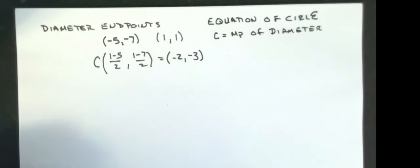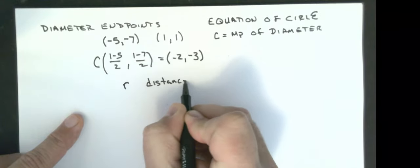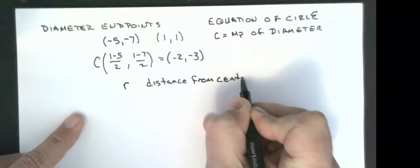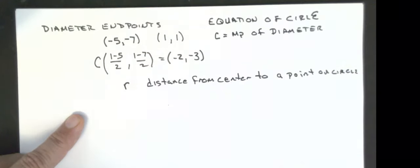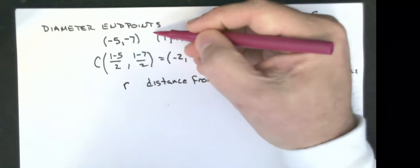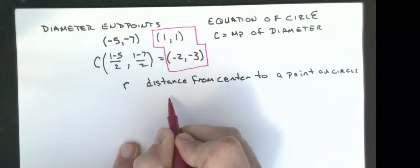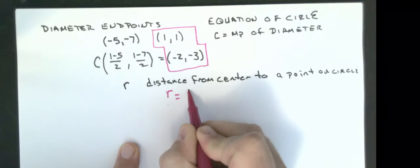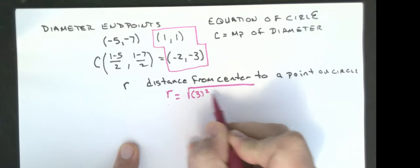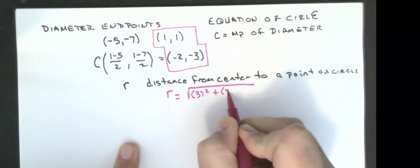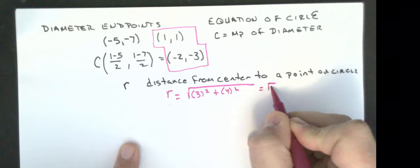The other thing I need is I need the radius. The radius is the distance from center to a point on the circle. I'm going to use these two points. So my distance, which is my radius, is the square root of one minus a minus two, which would be one plus two, which is three. And then one minus a minus three is one plus three, which is four. Three squared plus four squared, that's nine. My radius is the square root of 25. My radius is five.